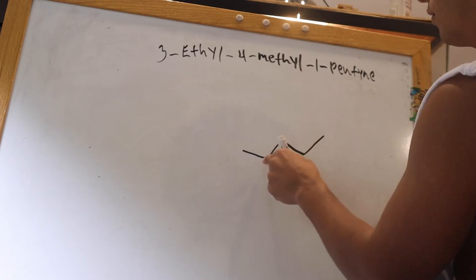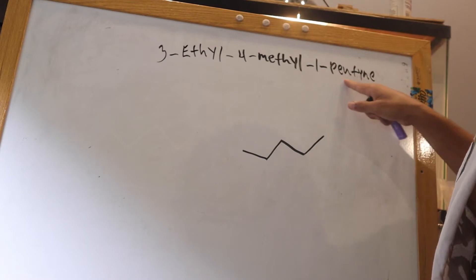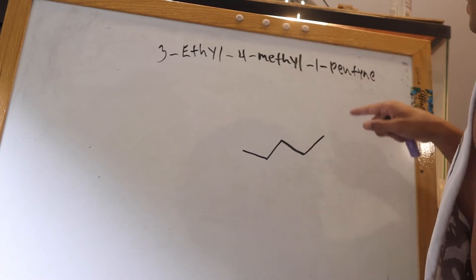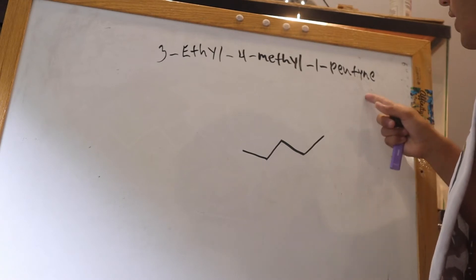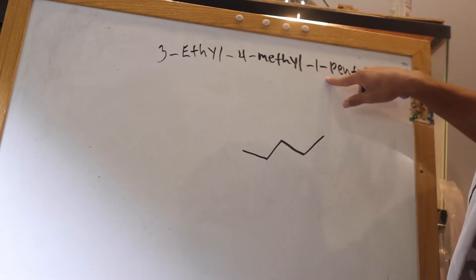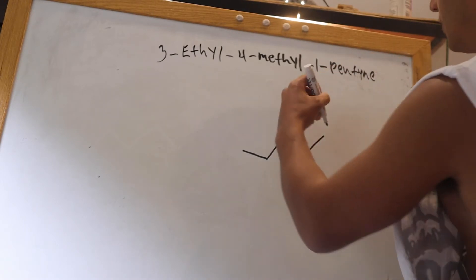So we got 1, 2, 3, 4, 5. First thing we do is look at the last part of the name. Pent meant five carbons. Pentene means that there's a triple bond somewhere. That Y-N-E indicates a triple bond. This number up here has to do with this last part of the name. It means that on carbon one, there is that triple bond.